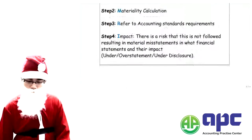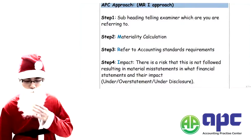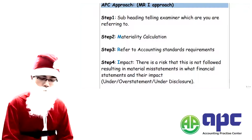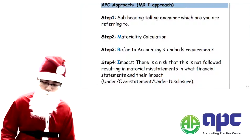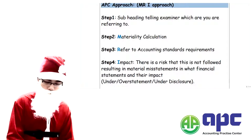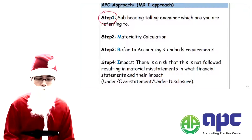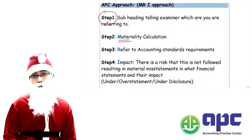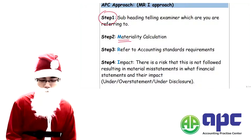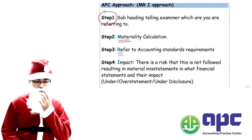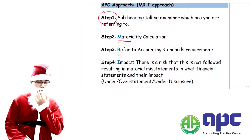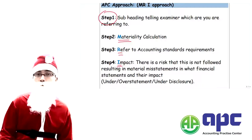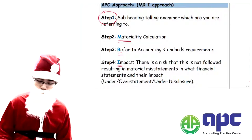On your page we've got four steps that you have to follow. Step one: we're going to use the subheading — always in a P7 exam use the subheading. Secondly, calculate the materiality. Thirdly, refer to the accounting standards requirements. Fourthly, state its impact as well.